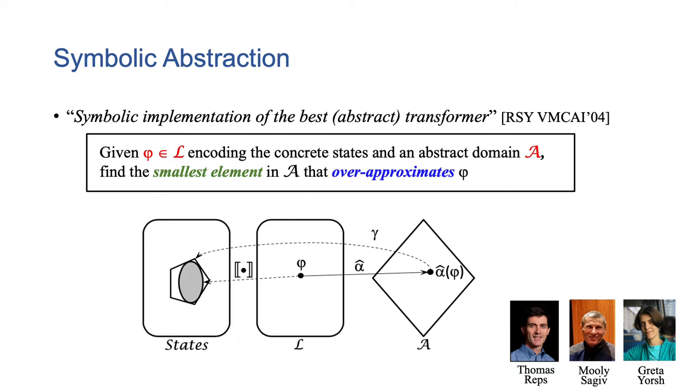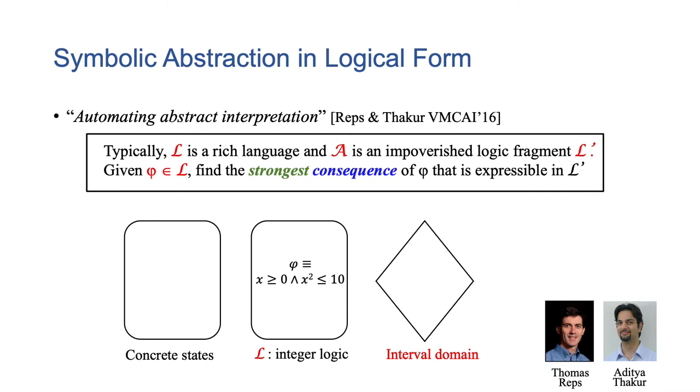Symbolic abstraction is a framework for automatically synthesizing the best transfer functions. It introduces a third space of values, namely a logical language. A logic can encode the concrete semantics of a program. Intuitively, the models of a formula represent the set of concrete states. Given a formula phi and an abstract domain, symbolic abstraction aims to compute the most precise element in the domain that can over-approximate the formula.